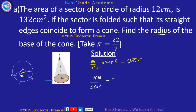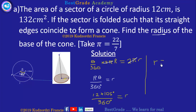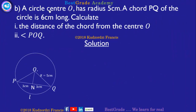We know the angle theta is 105 degrees, so we substitute the radius of 12 centimeters and theta equal to 105 degrees. This simplifies to 7 over 2, therefore the radius of the base of the cone is equal to 3.5 centimeters.